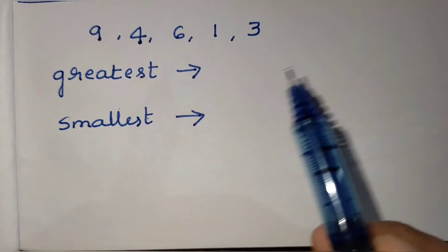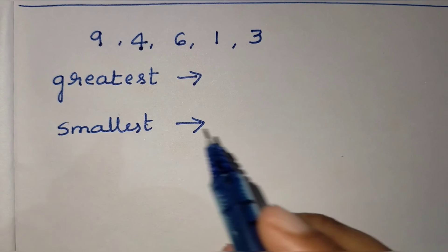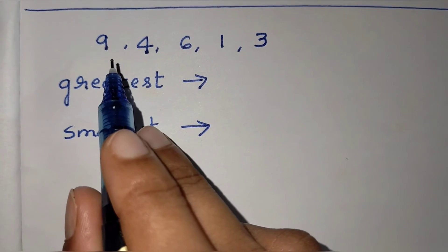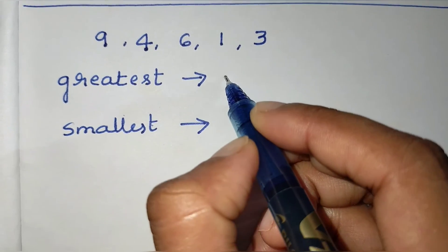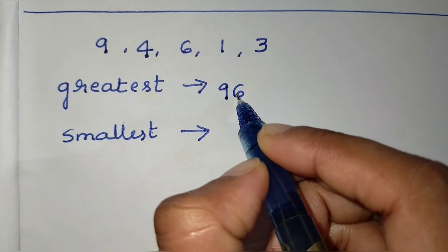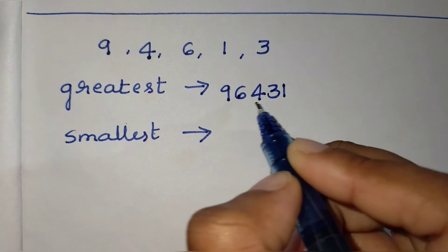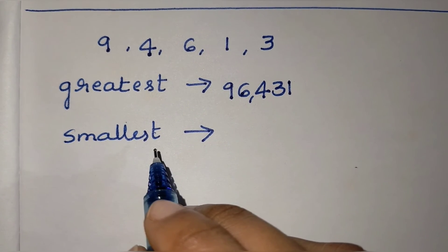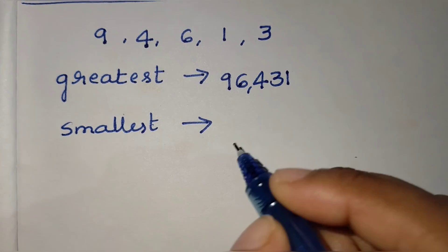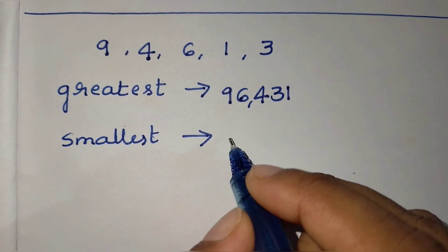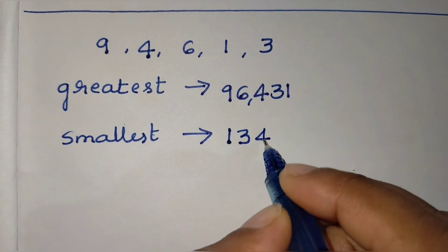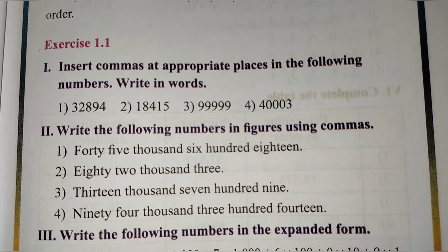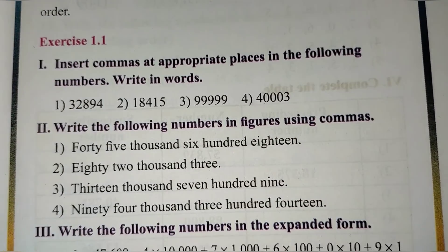Given the digits 9, 4, 6, 1, 3, form the greatest and smallest five-digit numbers. To form the greatest, arrange in descending order: 9, 6, 4, 3, 1 — giving 96,431. To form the smallest, arrange in ascending order: 1, 3, 4, 6, 9 — giving 13,469. The explanation of the chapter is done; we will solve the exercise in the next video.